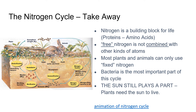Nitrogen cycle takeaways: nitrogen is a building block for life through proteins and amino acids; free nitrogen is not combined with other kinds of atoms; most plants and animals can only use fixed nitrogen. Bacteria is the most important part of this cycle — without bacteria, this cycle does not work. The sun still plays a part in this cycle because plants need the sun to live. Please check out the animation of the nitrogen cycle to further understand how this process works.